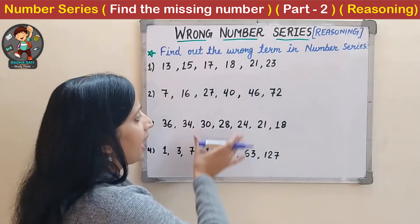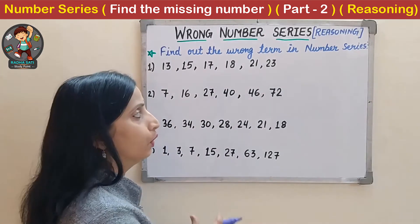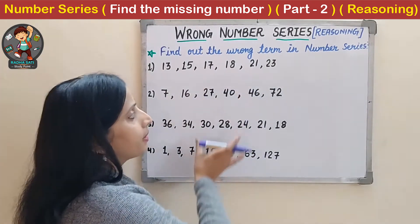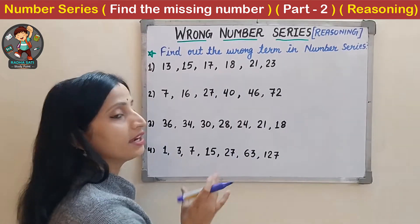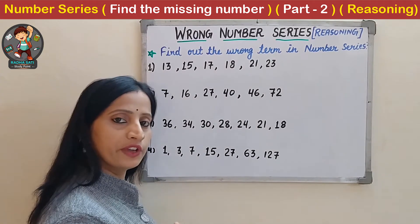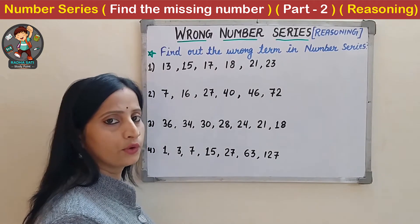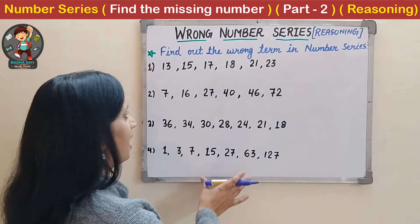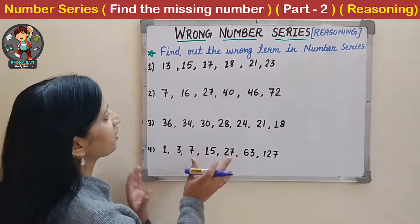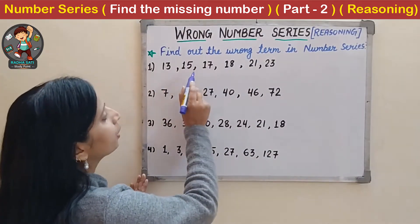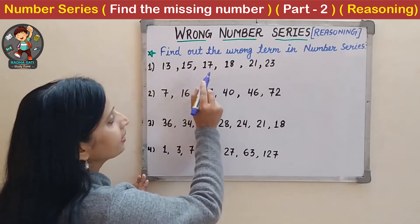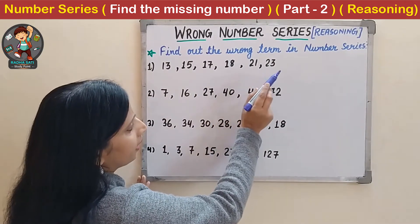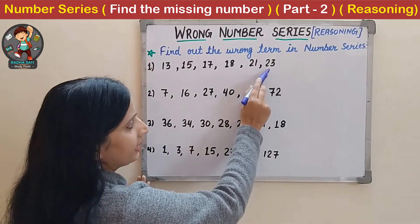So here you can see I have written a few number series, but in each number series one term is wrong. So we have to find out the wrong term. Let's start. The first question is 13, 15, 17, 18, 21 and 23.